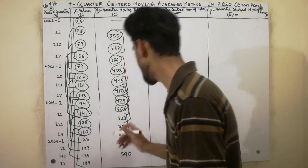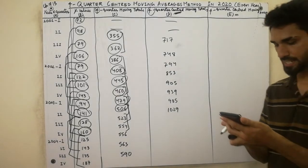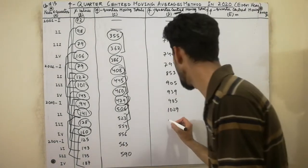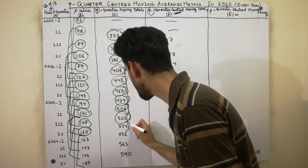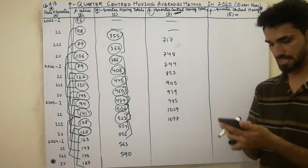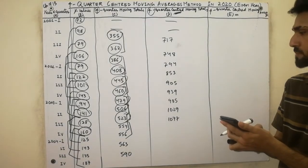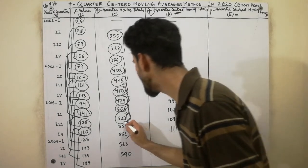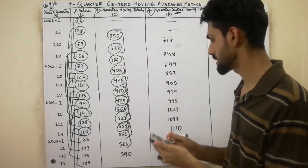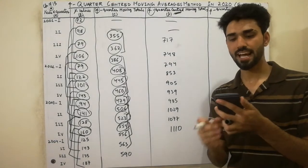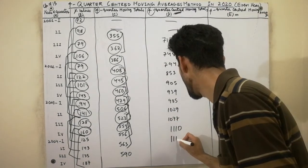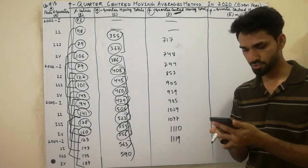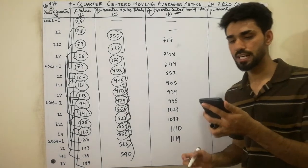Now we leave that value. Next we take the next two values: 523 plus 554. We get the value 1077. Then next we take 523 plus 563 — we get the value 1027. Next, 526 plus 563 and then 563 plus 590. We get the value 1153.